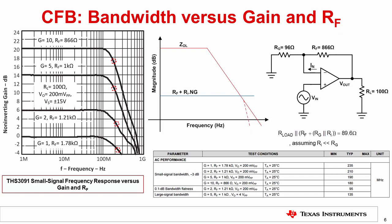The effective load on the amplifier's output is given by this equation. For example, in a gain of 10, the effective load on the output of the THS3091 will be 89.6 ohms instead of 100 ohms. In summary, the feedback resistance is an integral part of the loop gain equation. Hence, the feedback resistance recommended in the datasheet should be adhered to in order to preserve stability.